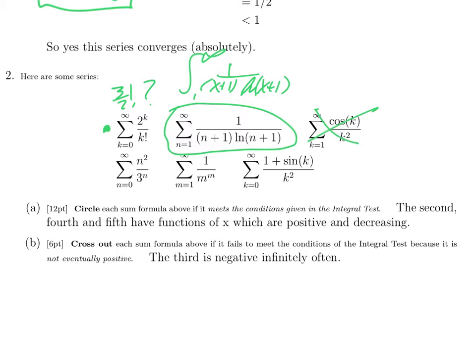n squared over 3 to the n, same as replace it with x squared over 3 to the x, totally fine. 1 over m to the m, replace it with 1 over x to the x. This would be problematic if x were negative. It would be hard to know what that meant. But when x is positive, perfectly sensible, positive, decreasing, all is good.